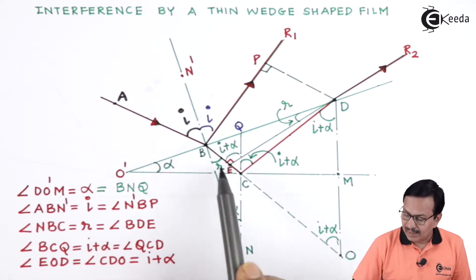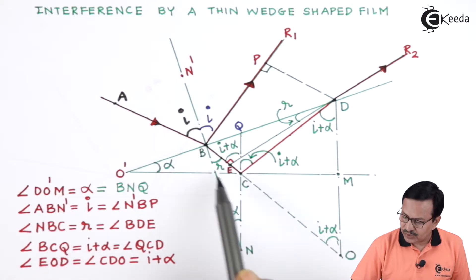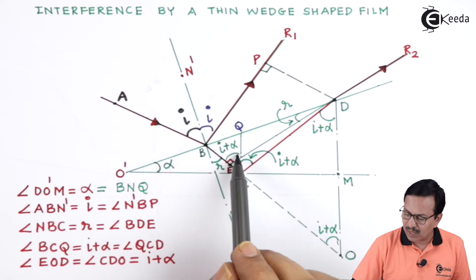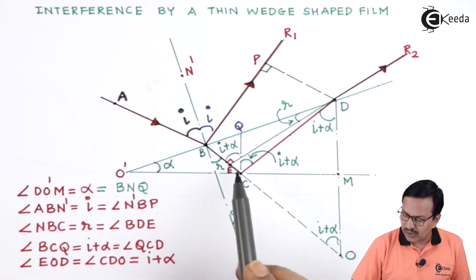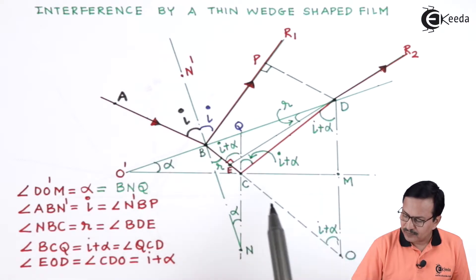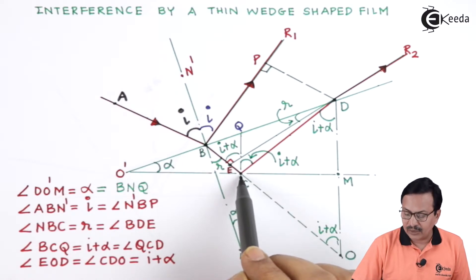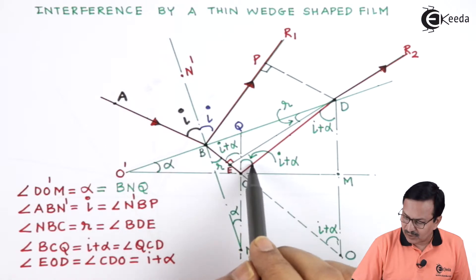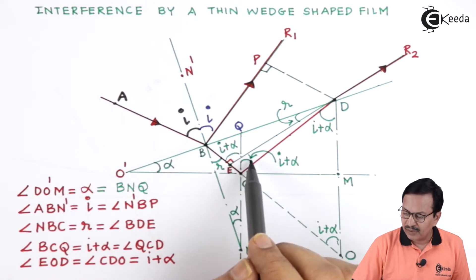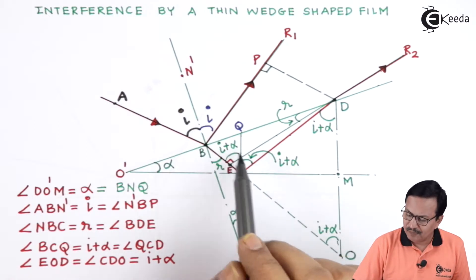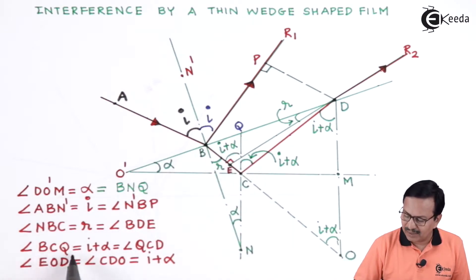Angle BCQ is the exterior angle of triangle BCN, and that's the reason it is equal to I plus alpha. This angle is also equal to angle QCD. Since this is the angle of incidence at the lower plate, the angle of reflection is also I plus alpha, making angles BCQ and QCD equal.